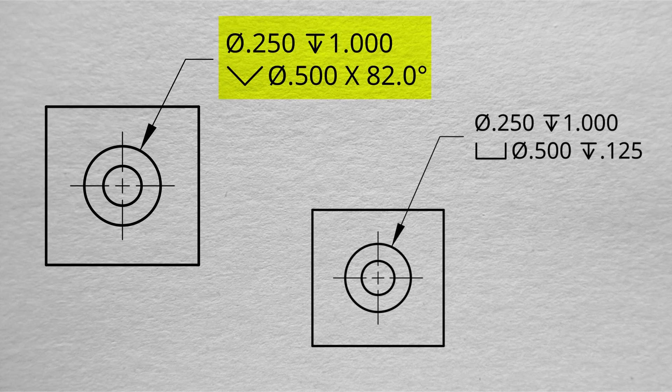We can see the top one has a countersink because it has the symbol. It also has a degree mark. And then our bottom one there is a counterbore because it has the mark, but it also has a drill depth for what that counterbore would be.